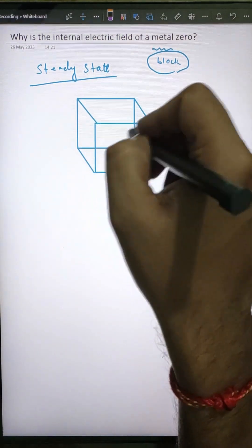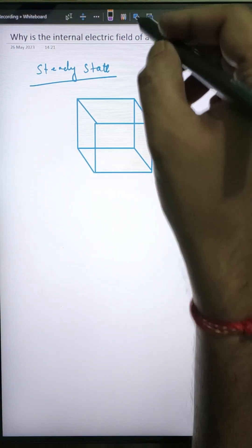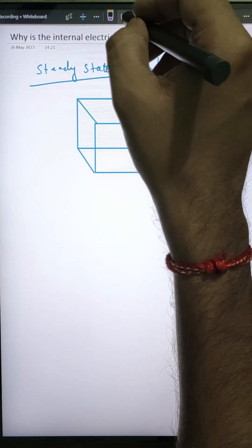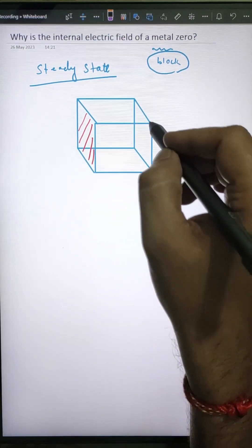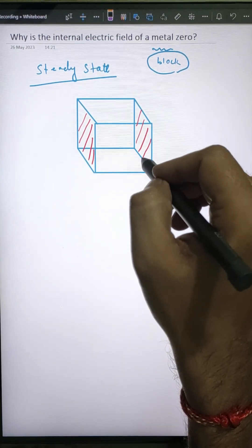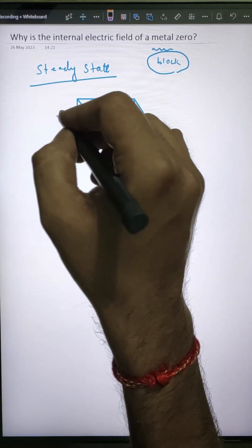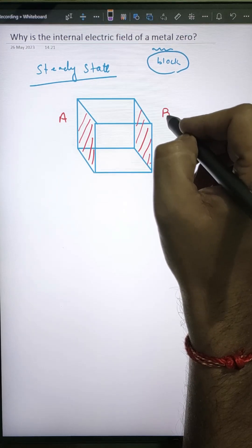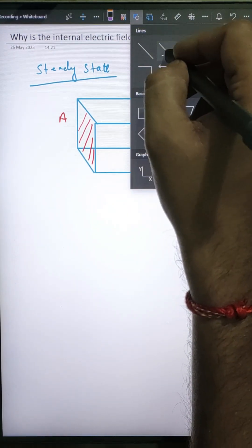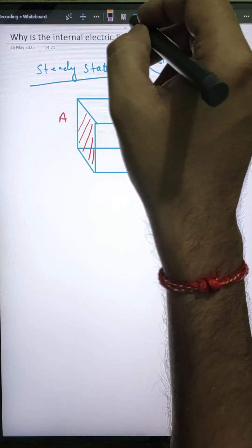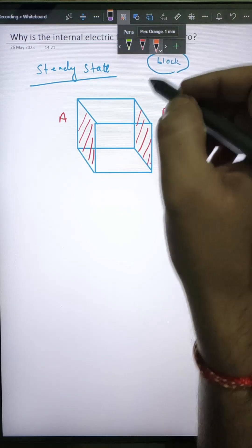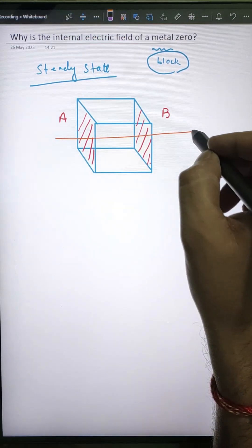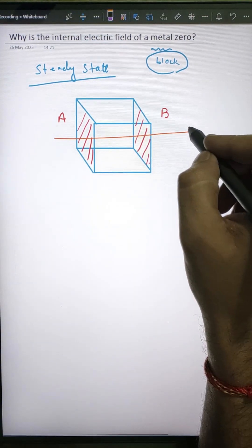Let's suppose this is a metal block. Let me shade this face and this face — we are only concerned about these two faces. Let's call them face A and face B. Now imagine that I'm applying an electric field in this direction.